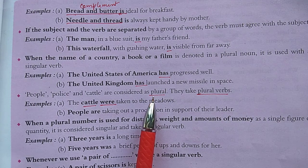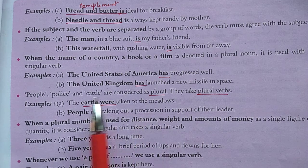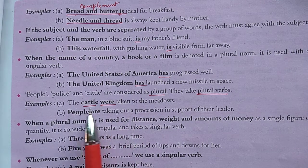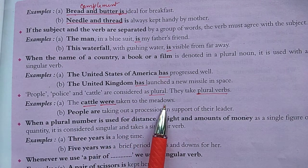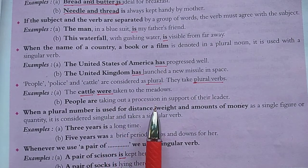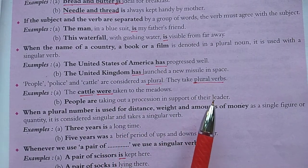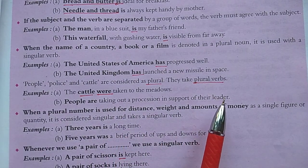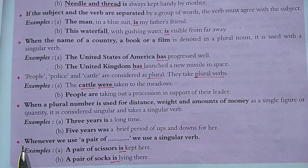'People,' 'police,' and 'cattle' are always considered plural and take a plural verb. For example, 'The cattle were taken to the meadow' — cattle takes a plural verb. 'People are taking out a procession in support of their leader' — people takes a plural verb.